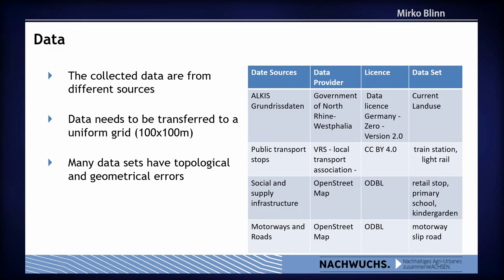We then looked at whether we could find open data for these themes. For the current land use, the government of North Rhine-Westphalia provides all land use data under a free license close to a CC zero license. Public transport organizations provide data under a CC license. Information on social infrastructure and motorways can be found in OpenStreetMap. So we have free data available.